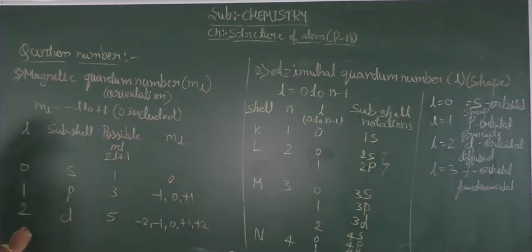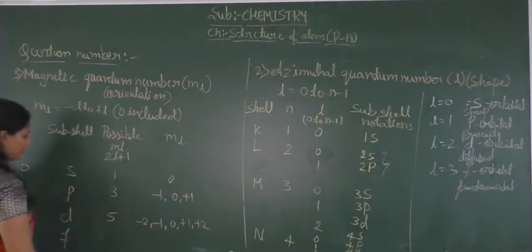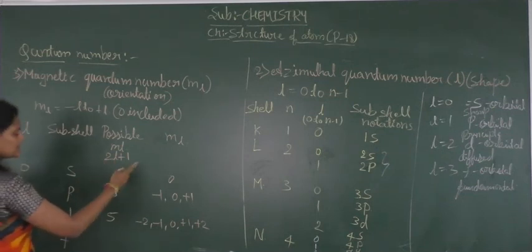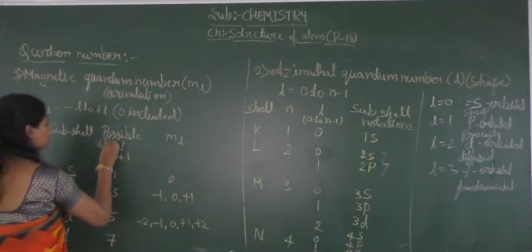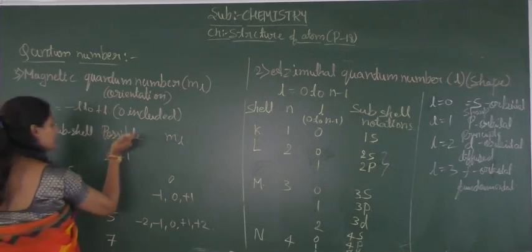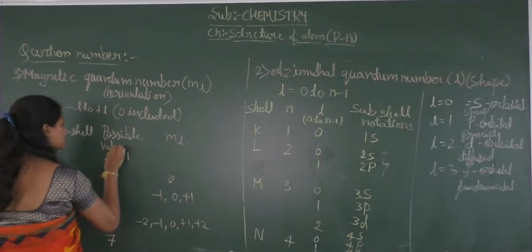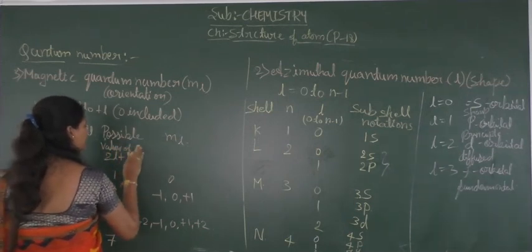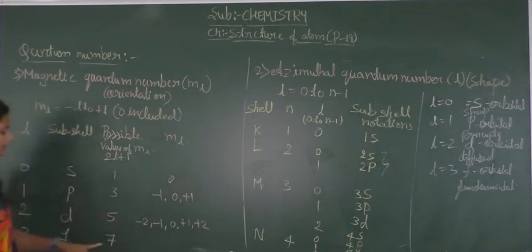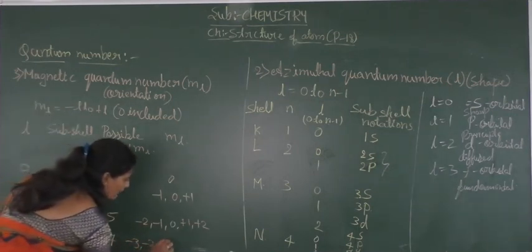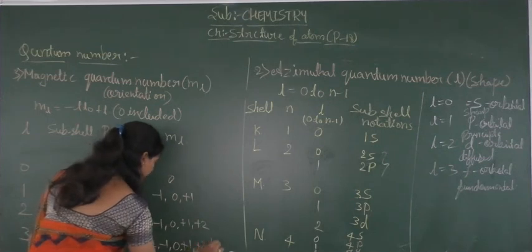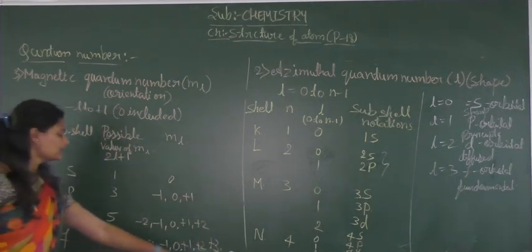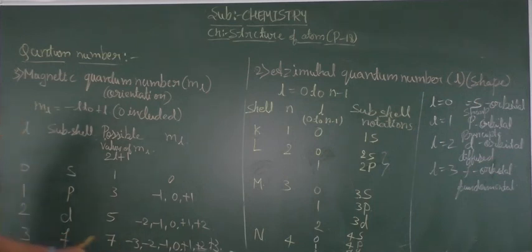For l=3, the subshell is F and the possible mₗ values = 2(3)+1 = 7. So the mₗ values vary from −3, −2, −1, 0, +1, +2, and +3. For S orbital there is only 1 orientation, for P subshell there are 3 orientations, for D subshell there are 5 orientations, and for F subshell there are 7 orientations.